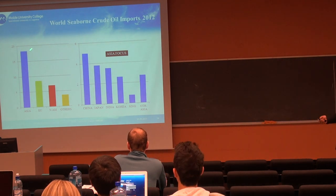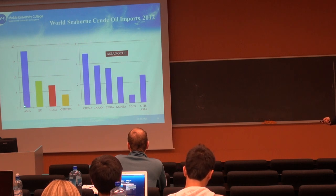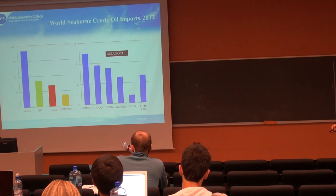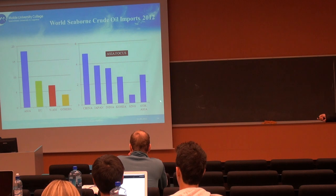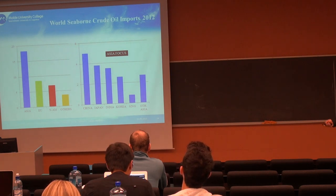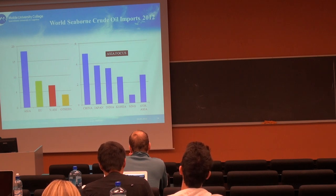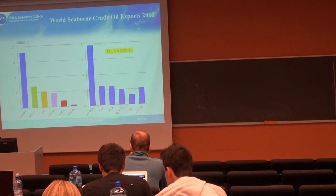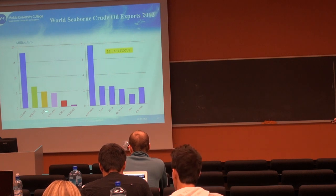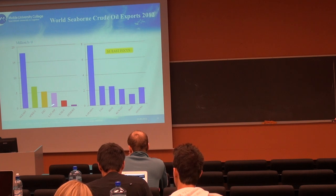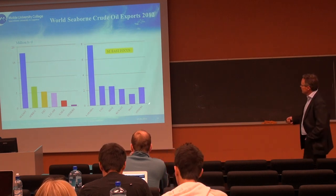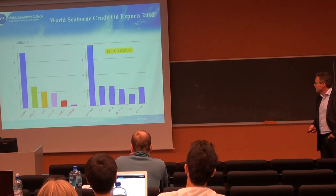Looking at oil imports by region: Asia is the big importing region, with China larger than Japan, and India and Korea also important. Europe and North America are also quite significant. For exporting regions, the Middle East is definitely the most important overall, with Saudi Arabia the biggest single exporter. Africa has become quite important, along with the former Soviet Union, Latin America, and the North Sea.